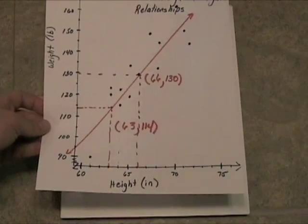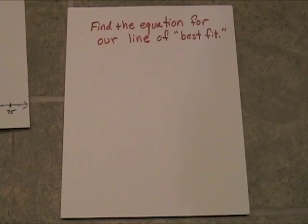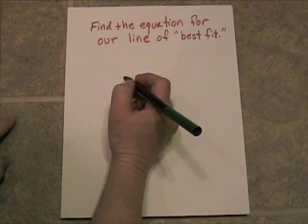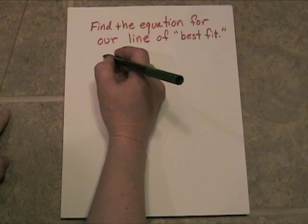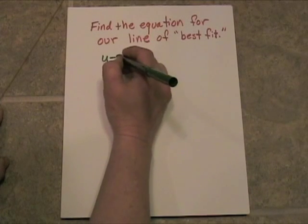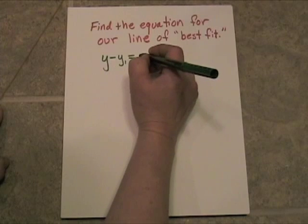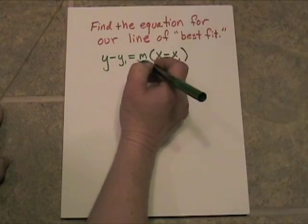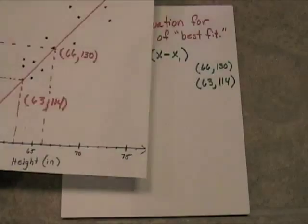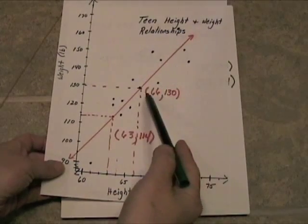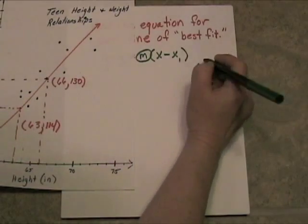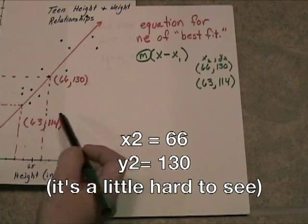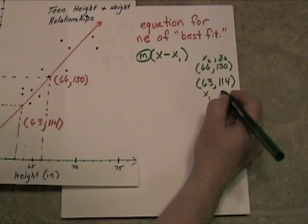So we've got two points on our line of best fit, and now it's time to find the equation for the line of best fit. We learned in our last lesson that as long as we can find two data points on a line, we can find the line. All we have to use is the point slope form: y minus y sub 1 is equal to the slope times the quantity x minus x sub 1. So it looks like we're going to have to find the slope for our two points. This one was farther to the right, the 66, 130, so this would be my x sub 2, y sub 2, and the 63, 114 would be my x sub 1, y sub 1.